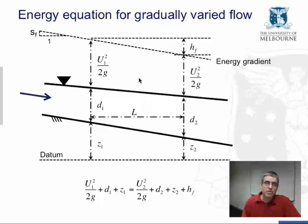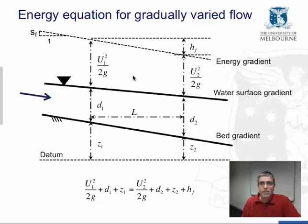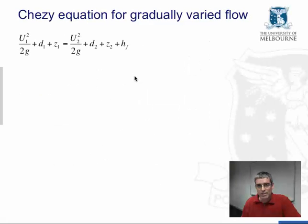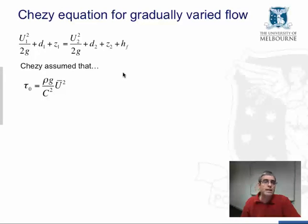Now we're going to use this energy equation for gradually varied flow to derive Chezy's equation under these conditions. So here it is again, the energy equation. And Chezy assumed that the shear stress acting on the boundary of the channel was proportional to velocity squared. And I've used the over bar to indicate an average velocity along the length, that short length of channel L. And I've replaced the constant of proportionality with Chezy's coefficient.